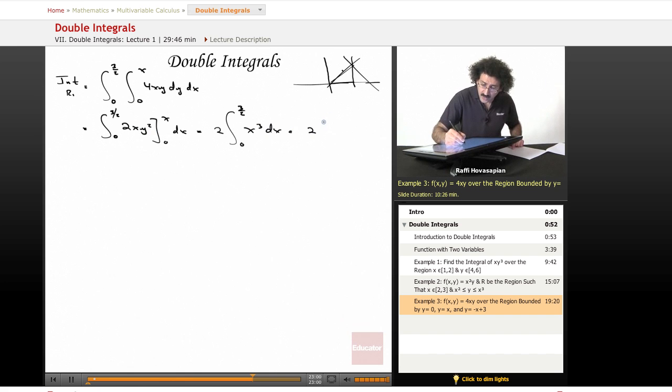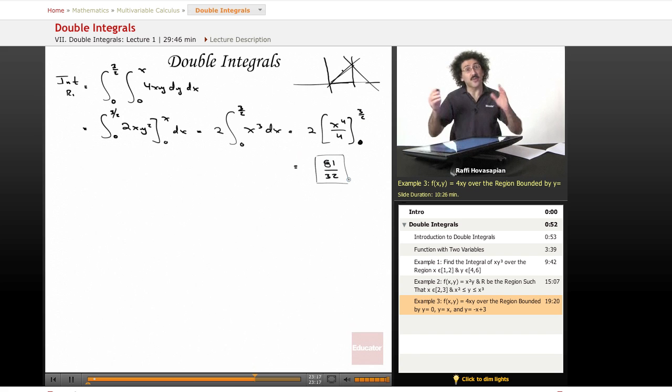And now that's going to equal 2 times x to the 4th over 4 evaluated from 0 to 3 halves. And when I go ahead and do that, I get 81 over 32. So that's the integral with respect to the first region.